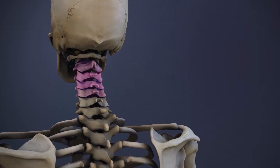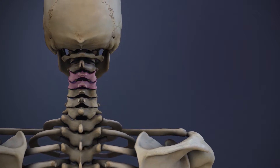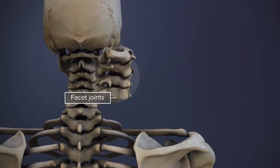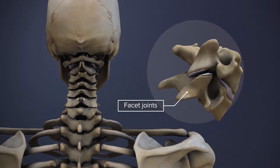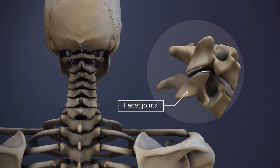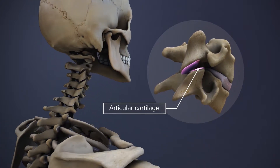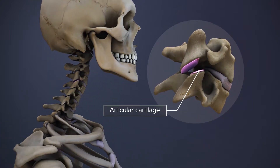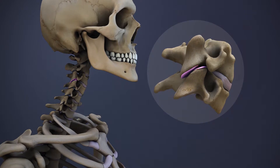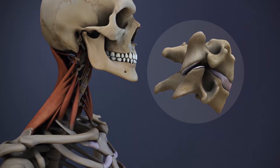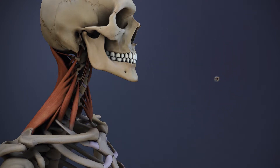The adjacent vertebrae are connected in the back by a pair of facet joints that allow limited forward, backward, and twisting motions. Articular cartilage enables the facet joints to move smoothly, while muscles, tendons, and ligaments help hold the vertebrae together. A strain or a tear to any of these tissues can cause neck pain and stiffness.